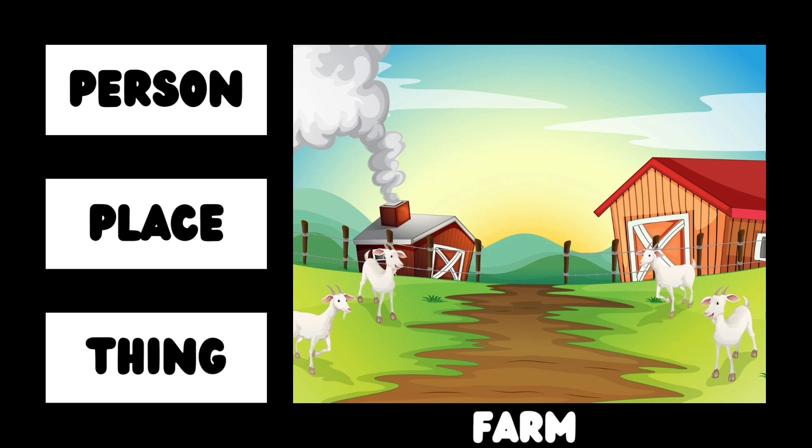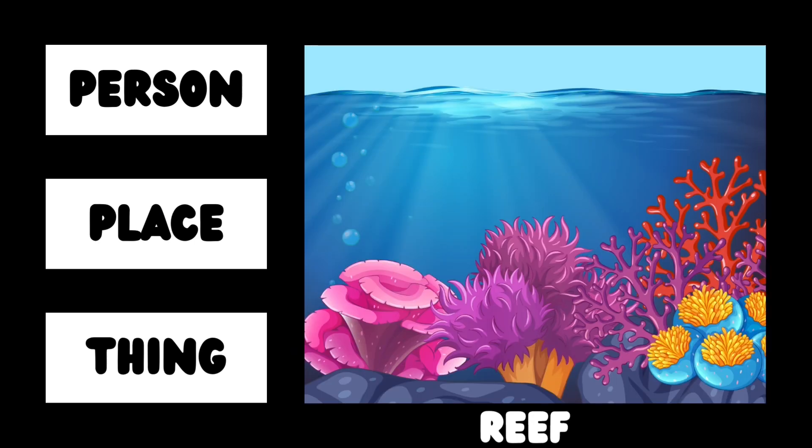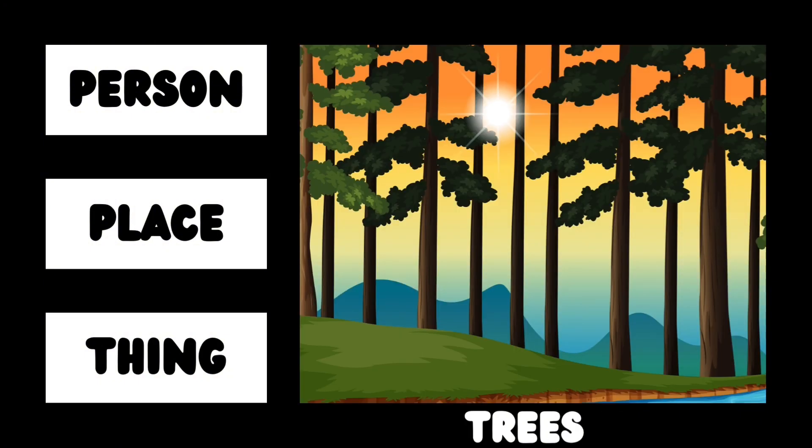Farm — farm is a place. Reef — reef is a place under the sea.